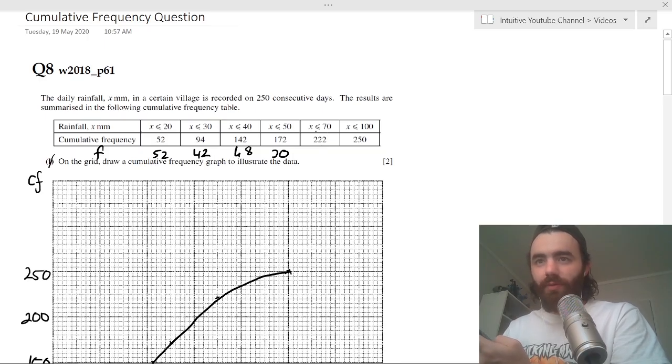So then between 50 and 70, well we do 222 minus 172, so that's 50. And then the last one between 70 and 100 is 250 minus 222, so it's 28.